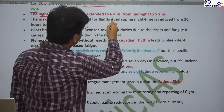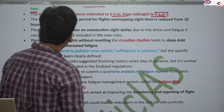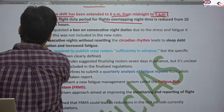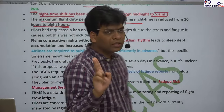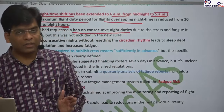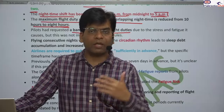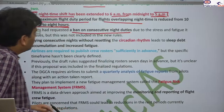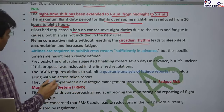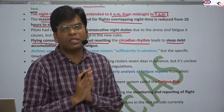The night-time shift definition has been extended from ending at 6 AM to ending at 5 AM — a reduction of one hour, giving pilots more relief. Maximum flight duty for flights overlapping nighttime has been reduced from 10 to 8 hours. There is also a ban on consecutive night duties — if you work a night duty for two days, the following day you should be given daytime work so you can sleep at night.